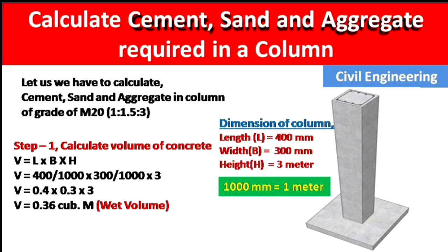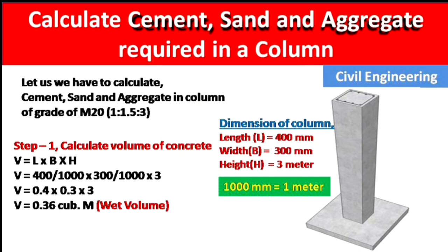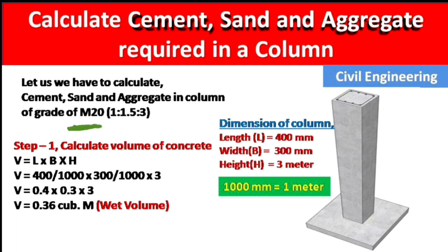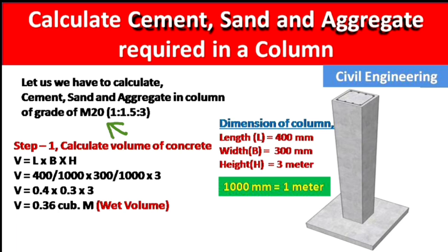A student was asking: given these column dimensions, how do we calculate the cement, sand, and aggregate? In this video I will teach you how to calculate the ingredients required in a column. The concrete grade is M20, and M20 grade has a ratio of cement:sand:aggregate of 1:1.5:3 — so 1 part cement, 1.5 parts sand, and 3 parts aggregate.